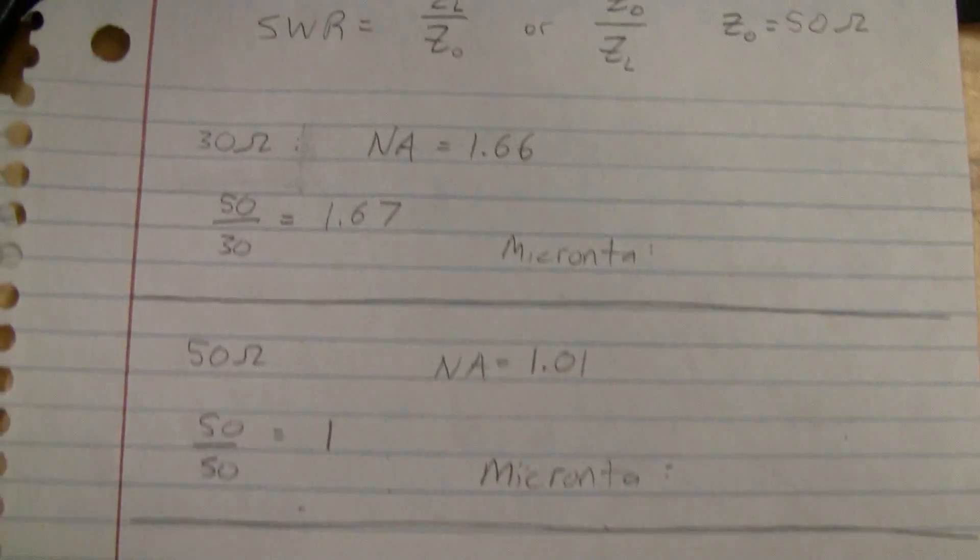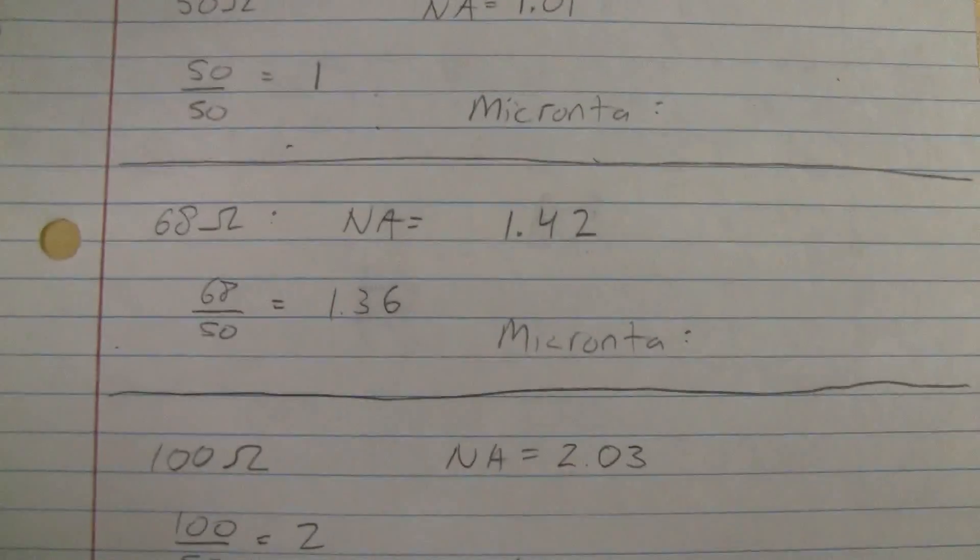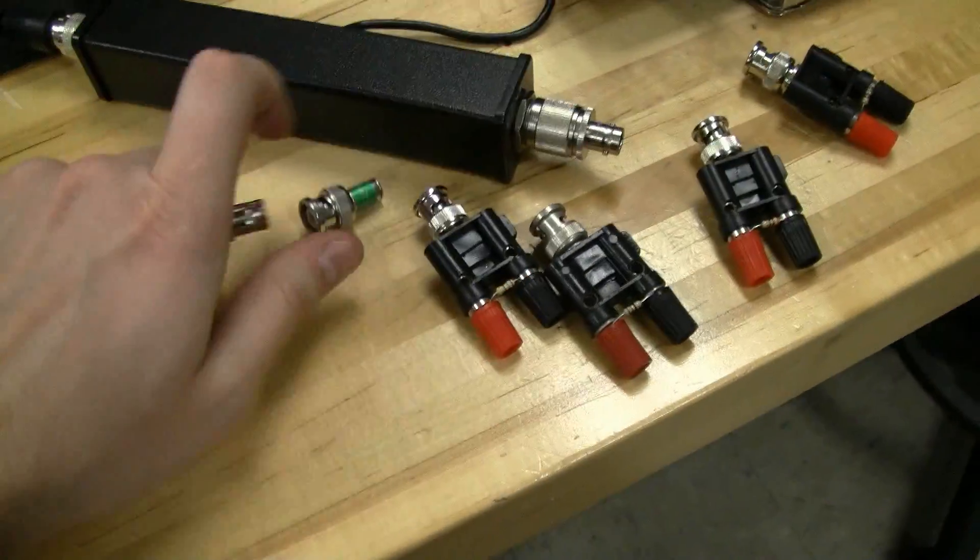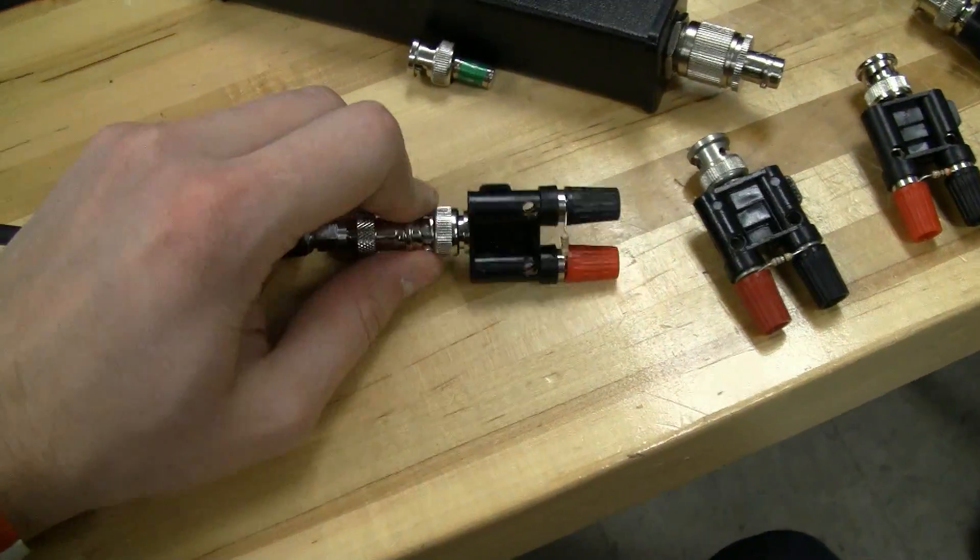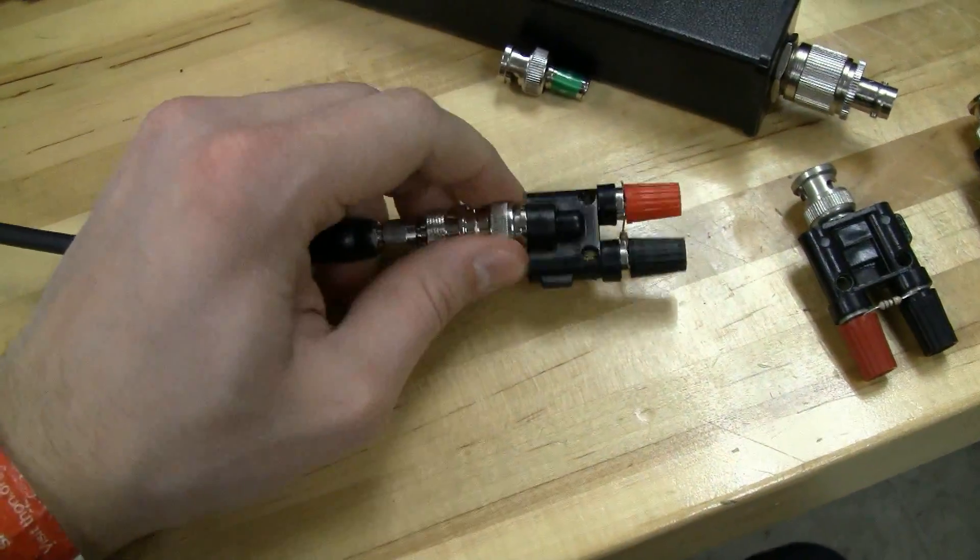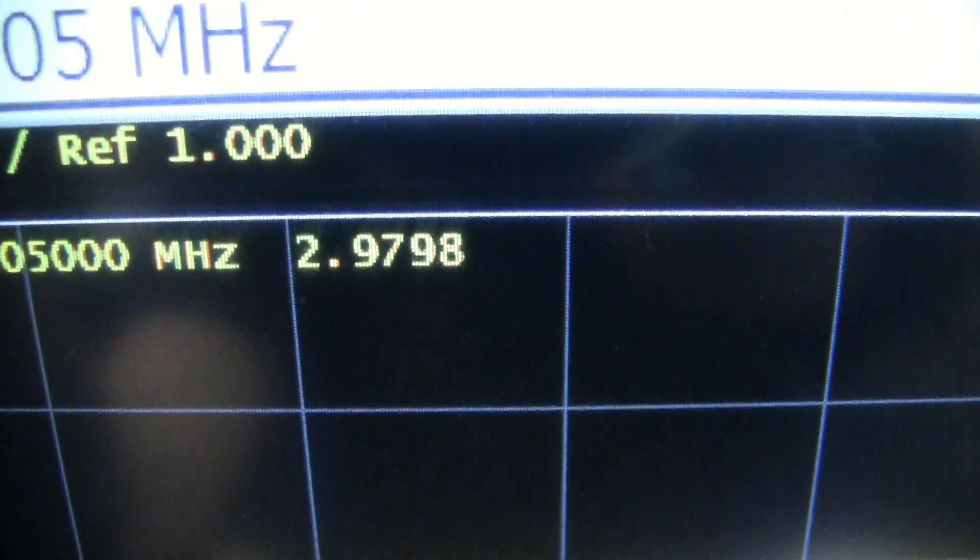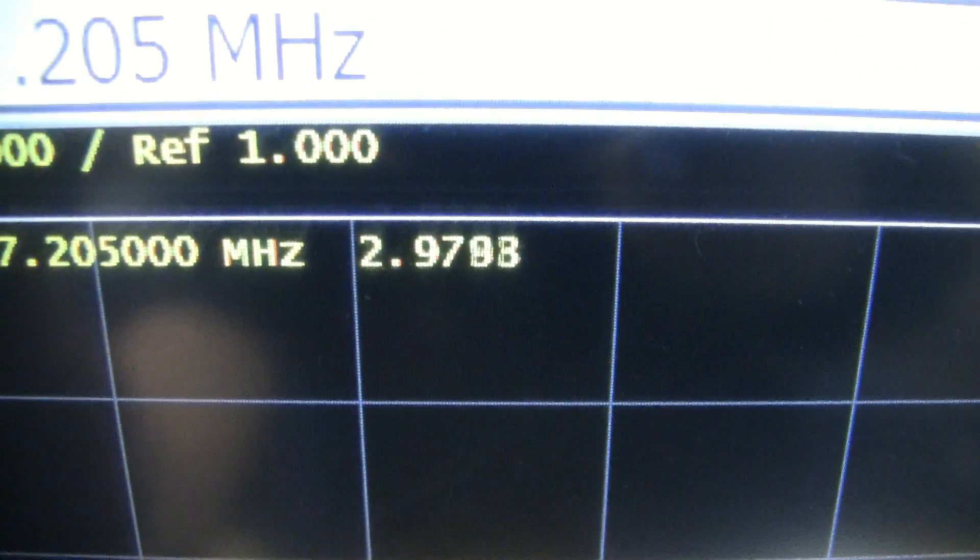I repeated that for all five of these resistor values. This one is 150 ohms. So 150 divided by 50, we'd expect an SWR of 3, and that's just about what we get, 2.979 and change.